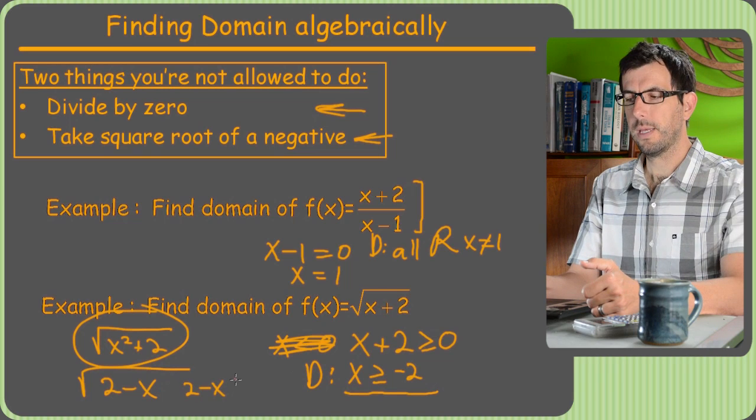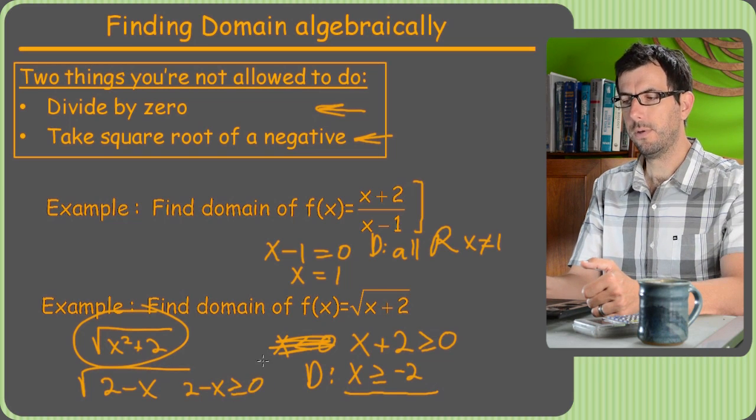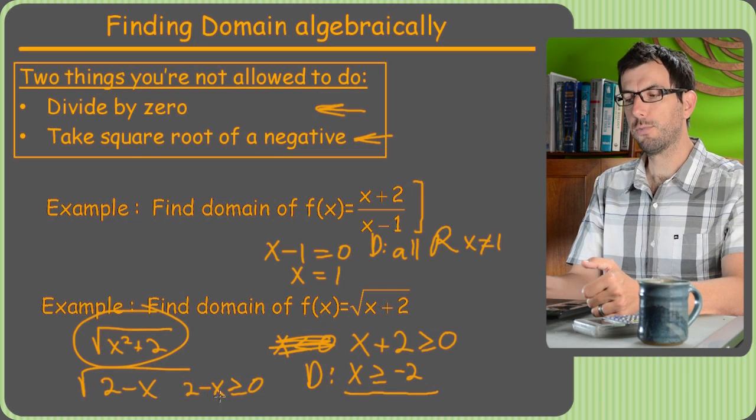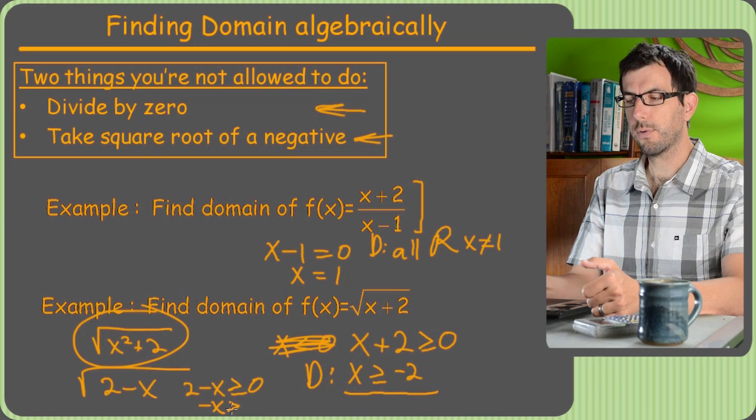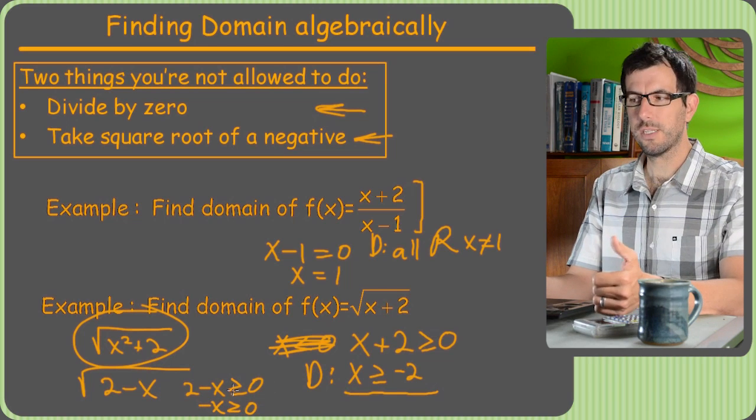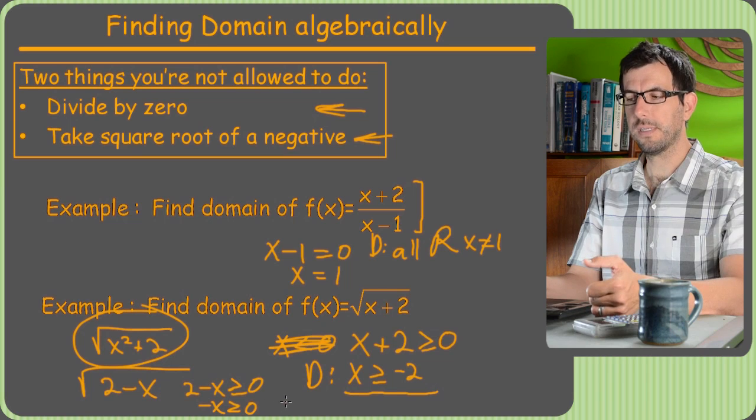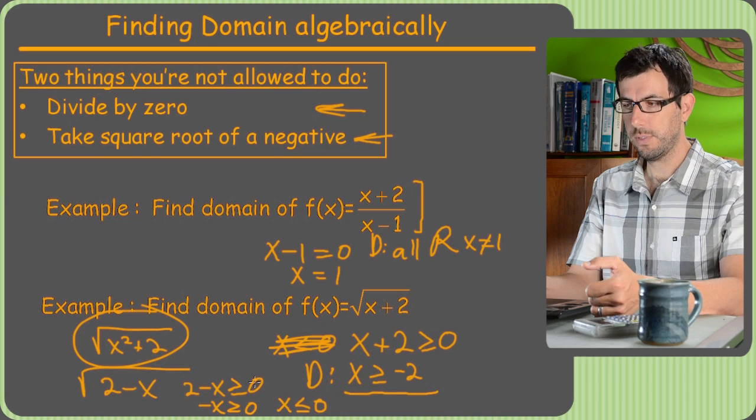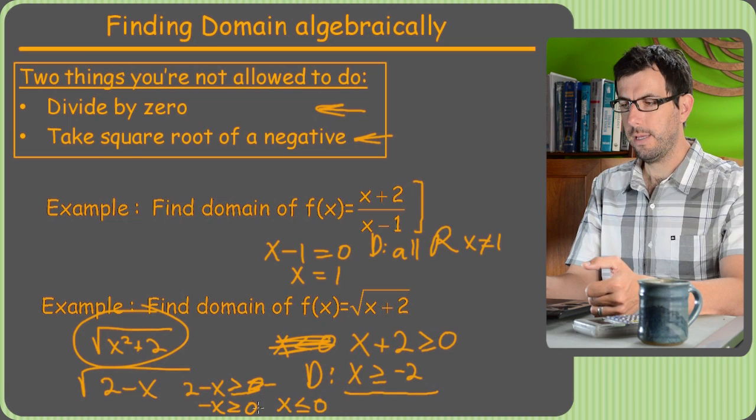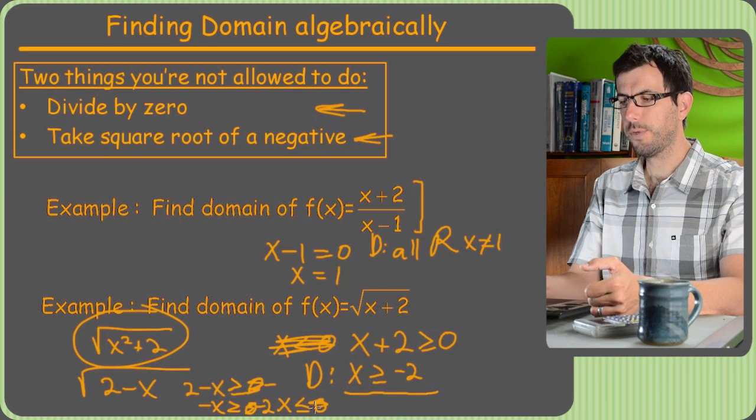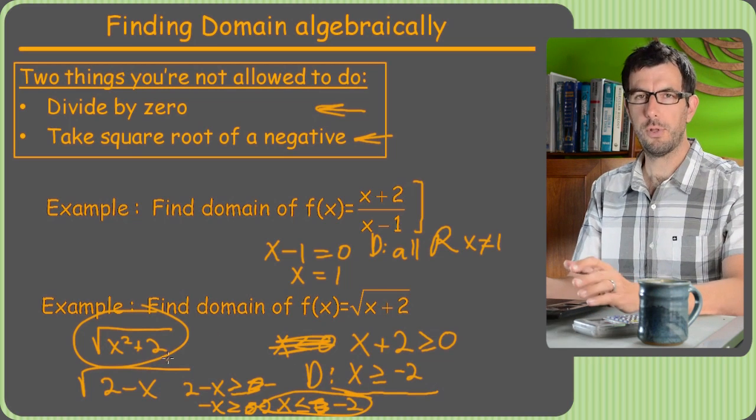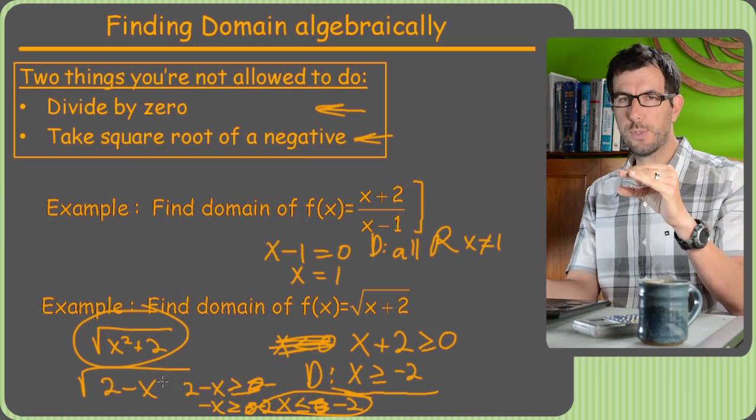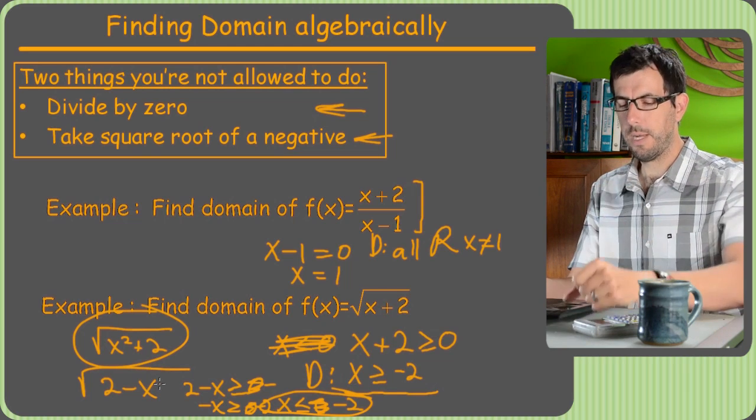Another slightly tricky one is if you do 2 minus x. Instead of x being greater than or equal to 2, it's going to be less than or equal to 2. Because we get 2 minus x has to be greater than or equal to 0. But then we subtract 2 from both sides, we'll have negative x is greater than or equal to negative 2. Now we have a negative 1 in front of x, so when we multiply by negative 1, we have to flip the sign. That's how we get x is less than or equal to negative 2. Just something to look out for. You don't really want to do these in your head. You basically want to take whatever's in the square root, set it greater than or equal to 0, and then solve the problem.